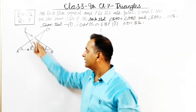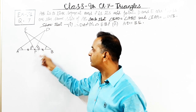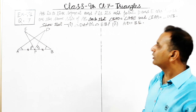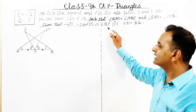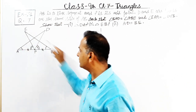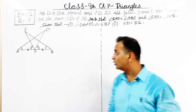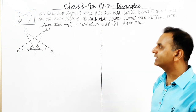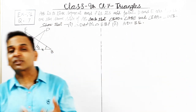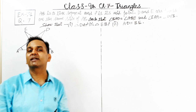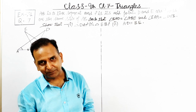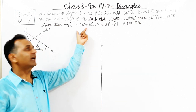Angle BAD at point A equals to angle ABE — that is given. Also angle EPA equals to angle DPB — these two are also equal to each other. What we have to show is: triangle DAP is congruent to triangle EBP. As well as AD equals to BE. AD and BE are the corresponding sides of these two triangles — if we prove the triangles congruent, then automatically by CPCT we can write AD and BE are equal.